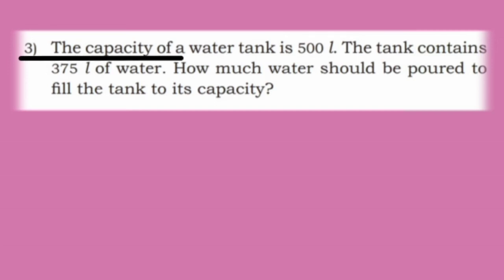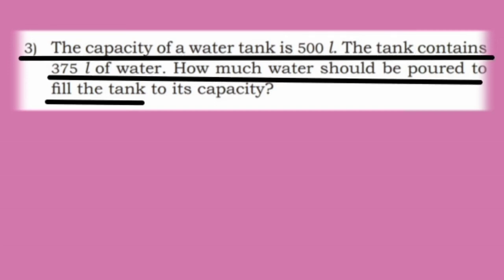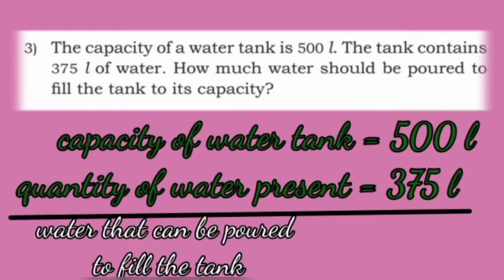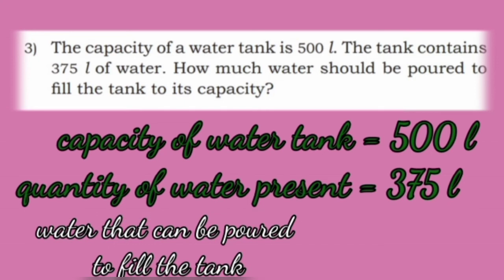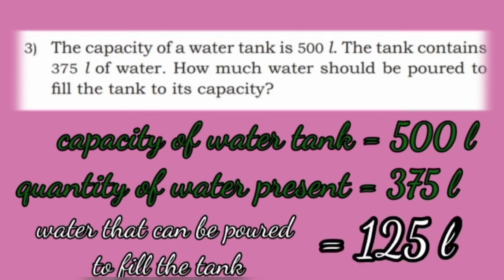Third problem: The capacity of a water tank is 500 liter. The tank contains 375 liter of water. How much water should be poured to fill the tank to its capacity? Capacity of water tank is 500 liter; quantity of water present is 375 liter. Subtract 500 minus 375. That is 125 liter. So water that can be poured to fill the tank is 125 liters.